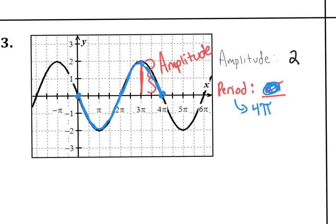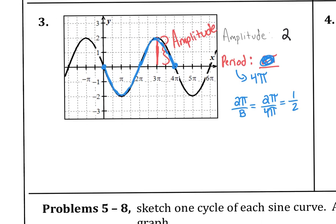For the equation, we use 2π over b. B is how long it takes to complete one cycle — so 2π over 4π. The π cancels, 2 over 4 becomes one half. That's what we put in front of x. So our equation is 2 times the sine of (one half)x.